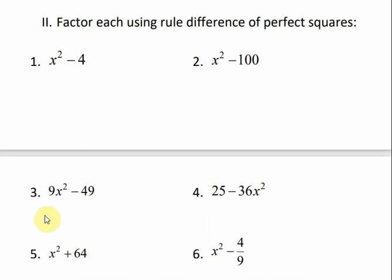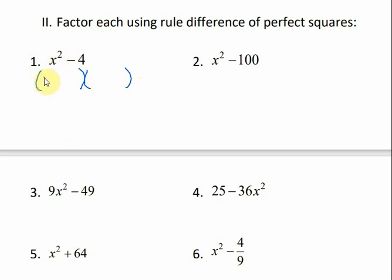Now let's use that method of factoring. To factor a difference of perfect squares, our answer is going to be in the form of two binomials. So we make two sets of parentheses. Then we take the square root of the first term — the square root of x squared is x — and put that in the first spots. The square root of 4 is 2, put that in the last spots. Then we make one binomial positive and one negative. It doesn't matter what order. And that's it — isn't that easy?